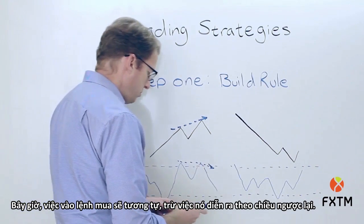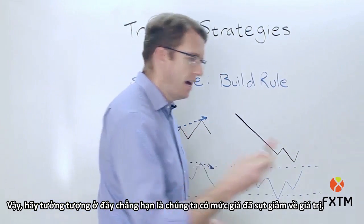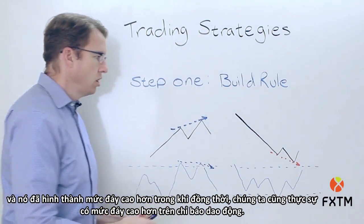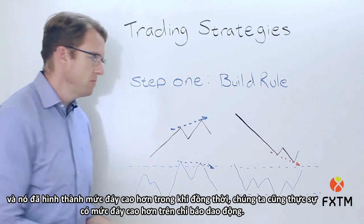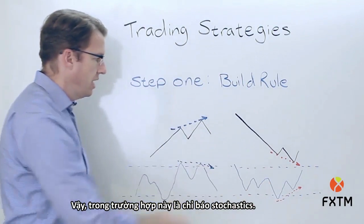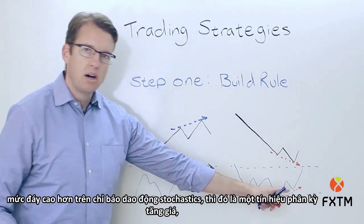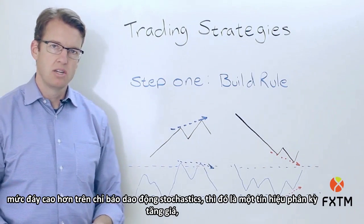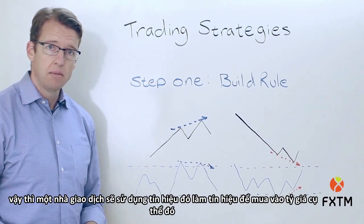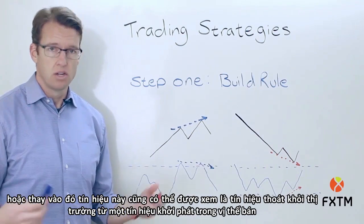That would be part of a rule set for a short entry or potentially as an exit signal. A long entry would be similar except just in reverse. Imagine that we have a price that has been declining in value — the exchange rate — and it's been forming lower lows, while at the same time we actually have higher lows on the stochastics oscillator. So lower lows on the price, higher lows on the stochastics, that's a bullish divergence. A trader would use that as a signal to go long that particular exchange rate, or alternatively, this could also be seen as an exit signal from a trader who's in a short position.